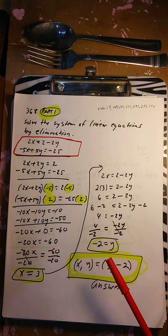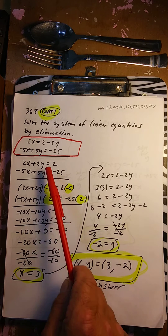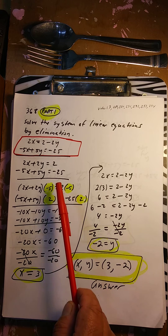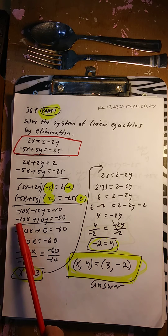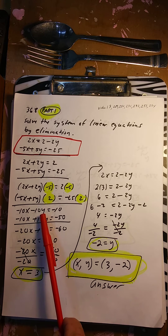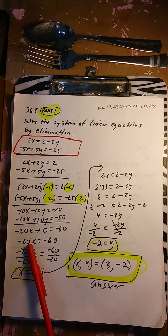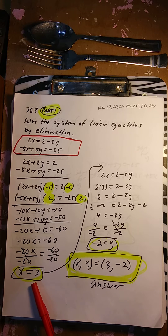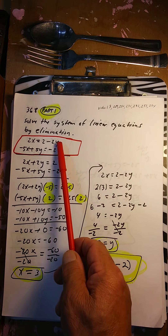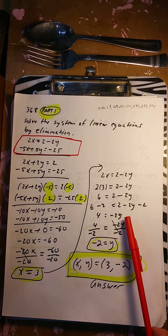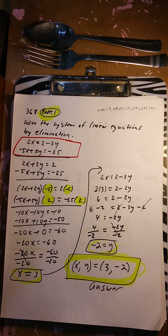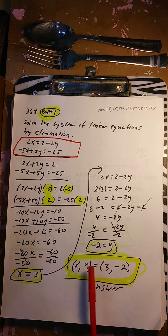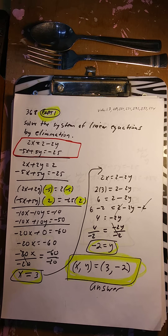Solve the systems of linear equations by elimination — trying to get rid of y. See the 2 and the 5? I put -5 and -5, 2 and 2. Multiplying gives -10x - 10y = -10, and the other gives -10x + 10y. The y's cancel: -20x = -60. Divide by -20, so x = 3. Substitute back: 2(3) = 6. Minus 2 on both sides gives 4 = -2y. Divide by -2: y = -2. So x = 3, y = -2.